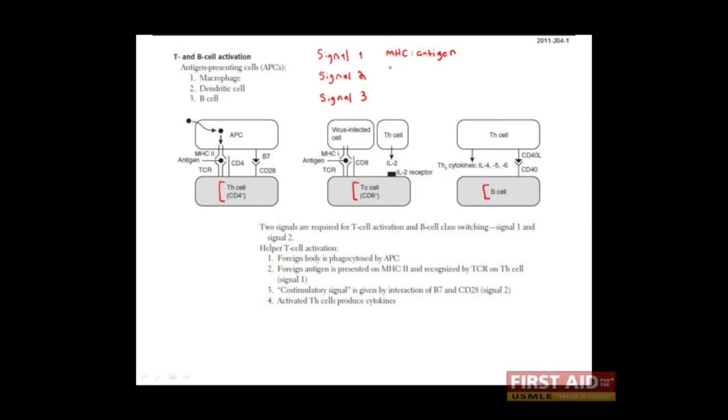Signal 2 comes from co-stimulatory molecules. The most important co-stimulatory molecules are the B7 molecules. They include B7-1, which is also known as CD80, and B7-2, which is also known as CD86. The reason that co-stimulatory molecules are important and needed will be explained in a moment.